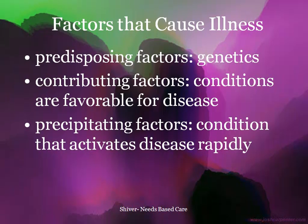Factors that can cause illness may be predisposing, such as genetics — meaning it's something you were born with or inherited from your parents. It may be a contributing factor, a condition that's favorable for a disease, meaning you have a lot of risk factors present. Or it may be a precipitating factor, a condition that activates disease rapidly.